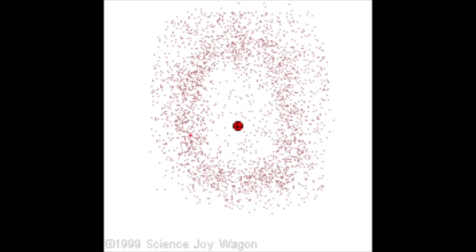Flash back to 1887, when Erwin Schrödinger was born in Vienna, Austria. Flash forward to 1926: the Austrian physicist took the Bohr model a step further using mathematical equations. He described the likelihood of finding an electron in a certain position, and the outcome gave him the electron cloud model. Where the cloud was densest, the higher the probability of finding an electron in that area.